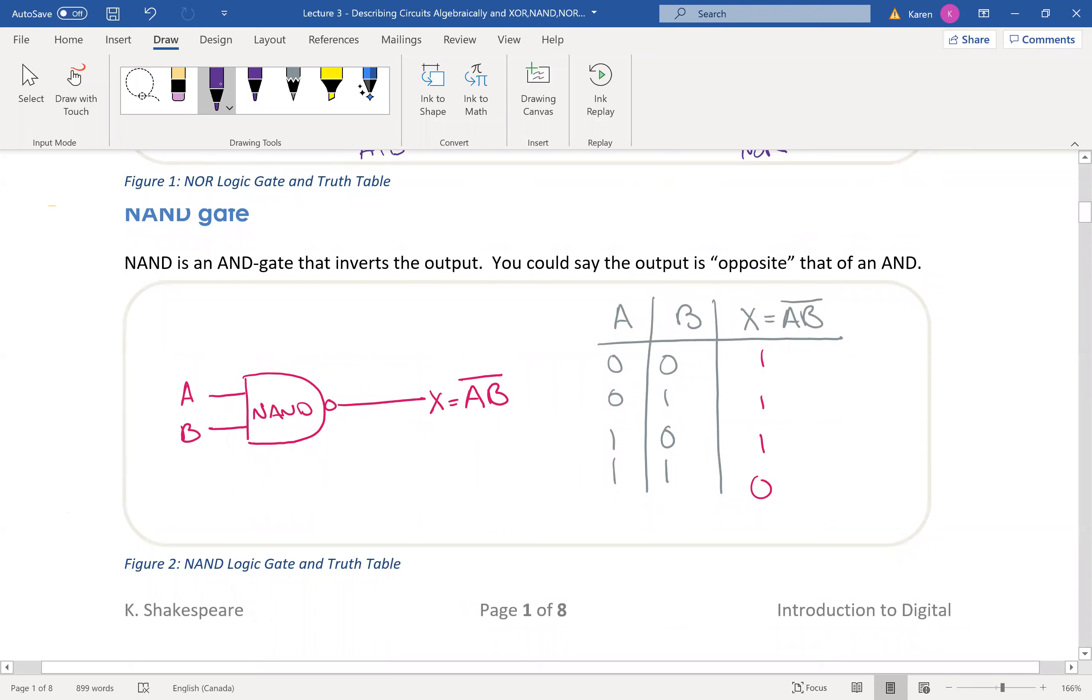A NAND gate is another popular combination. It is taking an AND and putting it through an inverter to get A and B inverted. So if we were to look at just A and B,